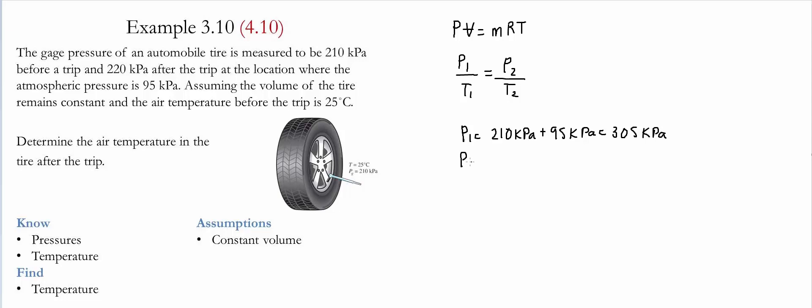Then we do the same process for P2. In this case, we have 220 kilopascals, and we add once again the atmospheric pressure. This gives us 315 kilopascals. We do the same process for the temperature, which in this case is equal to 25 Celsius, and we add 273 to make it into Kelvin. This value is going to give us 298 Kelvin.